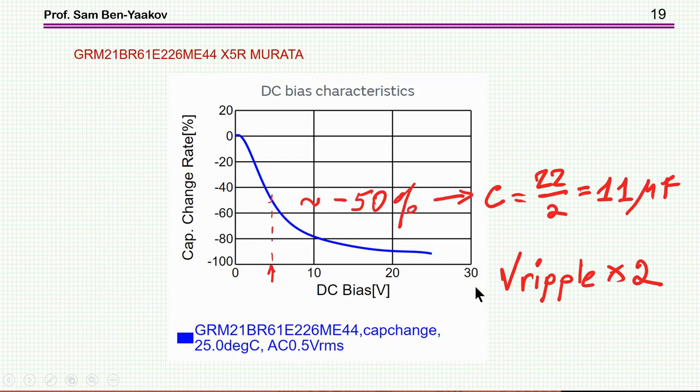Now I'm going back a little bit to the capacitor. This is a ceramic capacitor. We had two 22 microfarad capacitors. So the first thing I like to look at is how is this capacitance affected by the DC bias. This is a 25 volt capacitor. And lo and behold, at 5 volts, which is the output voltage on the output capacitor, it's already 50% down.